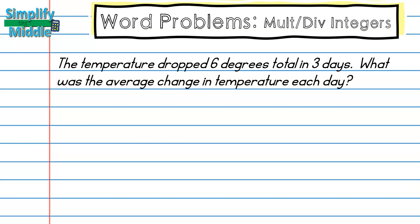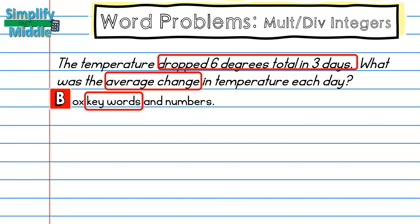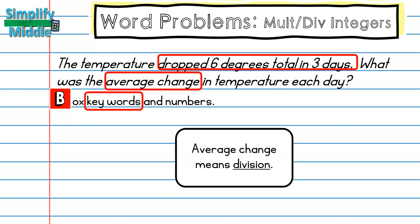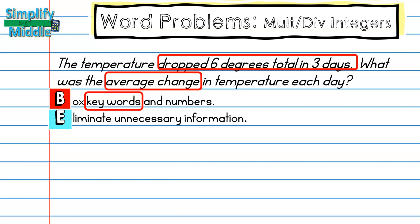The temperature dropped six degrees total in three days. What was the average change in temperature each day? I'll first start by boxing any keywords or numbers. I notice it dropped six degrees total in three days, and 'average change' — I know that average change in a word problem means division, so I know I'm going to be dividing here.